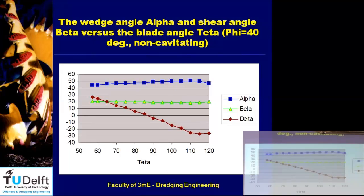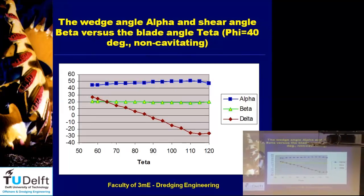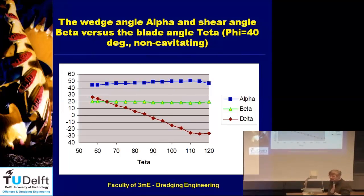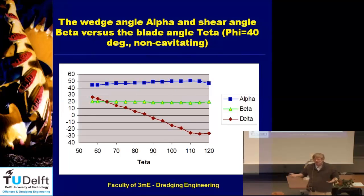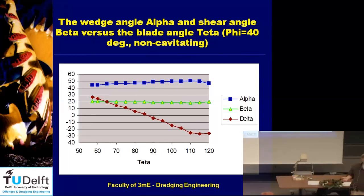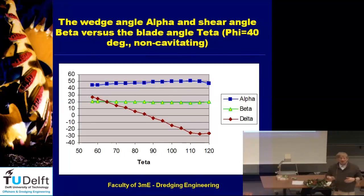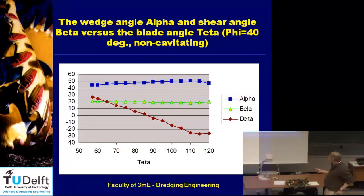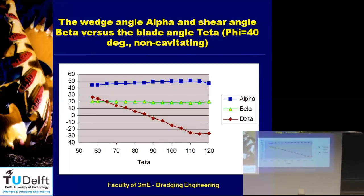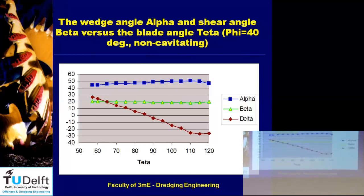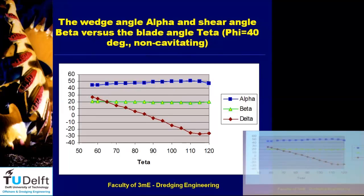For the external friction angle, with a 60-degree blade the sand is moving upwards — upward friction on the blade. As I increase my blade angle, I see a decrease of external friction. Somewhere near 90 degrees it's zero — no friction at all — and then it becomes negative, meaning it's in the opposite direction. Below 60 degrees there will not be a wedge at all — I cannot even draw a wedge in front of the blade — so below 60 degrees the cutting process is without a wedge.